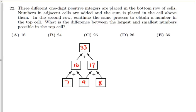The largest is 33. The answer is 33 minus the 7 we just calculated, which is 26. So 26 is the difference between the largest and smallest numbers possible in that top cell.